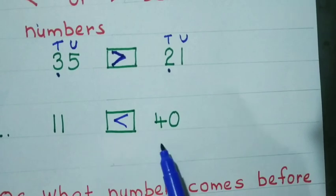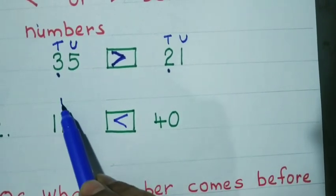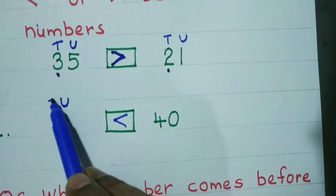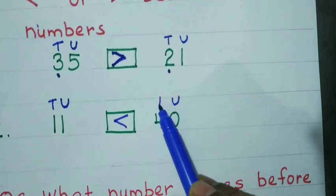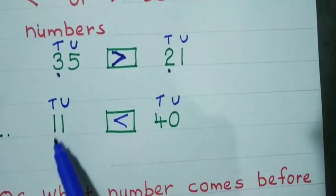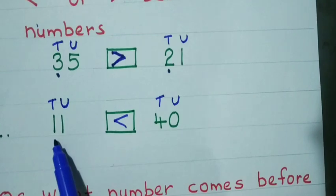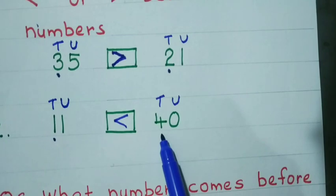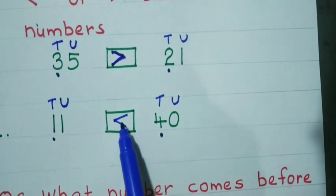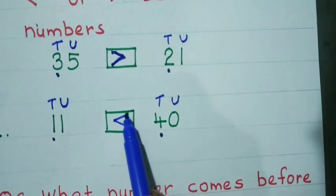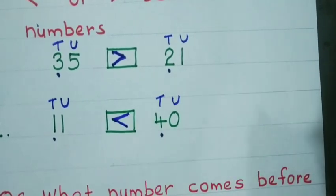11 and 40. Write the places — it will help you find greater or smaller. Always read from the tens side. In 11, 1 is at the tens place. In 40, 4 is at the tens place. Therefore, 11 is smaller than 40.